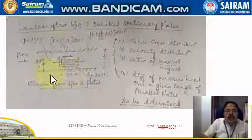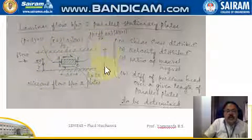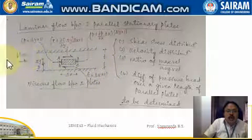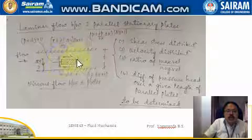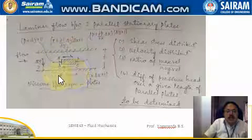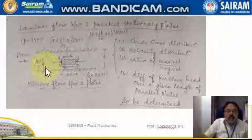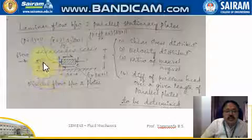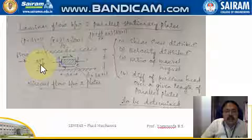We are taking two parallel plates which are at a distance t apart, and the flow is taking place from left to right. We take one fluid element here of length delta x, at a distance y from the lower fixed plate, and the thickness of this fluid element is delta y.